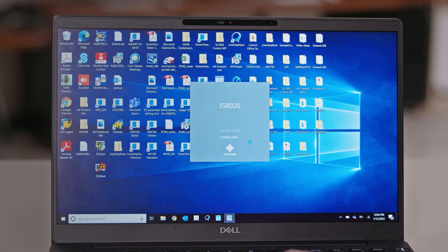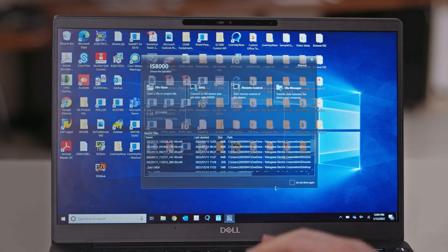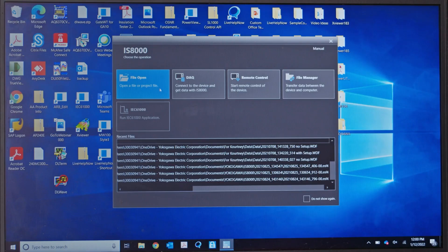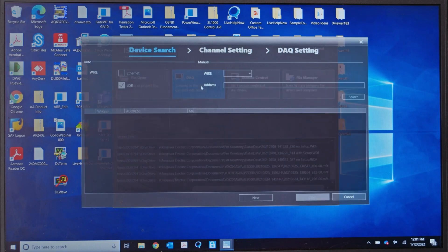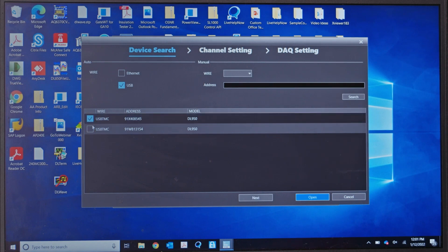If you want to display all the channels from all the DL950s on one screen and save the data in one file, the IS8000 software can be used. You can connect the DL950s to the software to control them remotely, record data, transfer data saved on the DL950s to your PC, or load data for analysis.